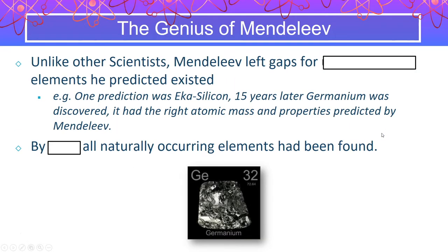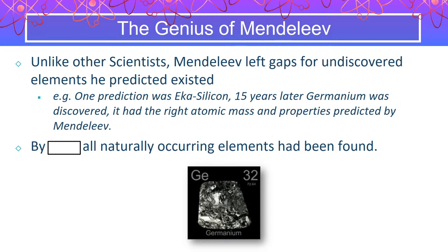Mendeleev left gaps in his periodic table for yet-undiscovered elements that he predicted did exist. The video talked about gallium, but another example is germanium — he predicted it would have all these specific properties, and sure enough, 15 years later they discovered it and he was right. He was able to do this by looking at the elements surrounding the missing element, examining their masses and properties, and predicting what the missing one would be like and how it fit into the pattern.